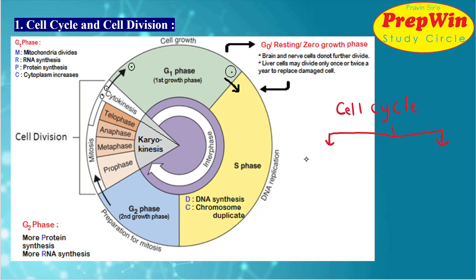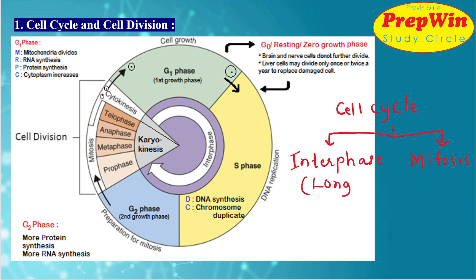So this cell cycle can be divided into two phases. The first phase is called the interphase and the second phase is the phase of mitosis. So this entire cell cycle starts with the interphase. The interphase is the long phase and the mitosis phase is the short phase. Mitosis is the actual cell division.